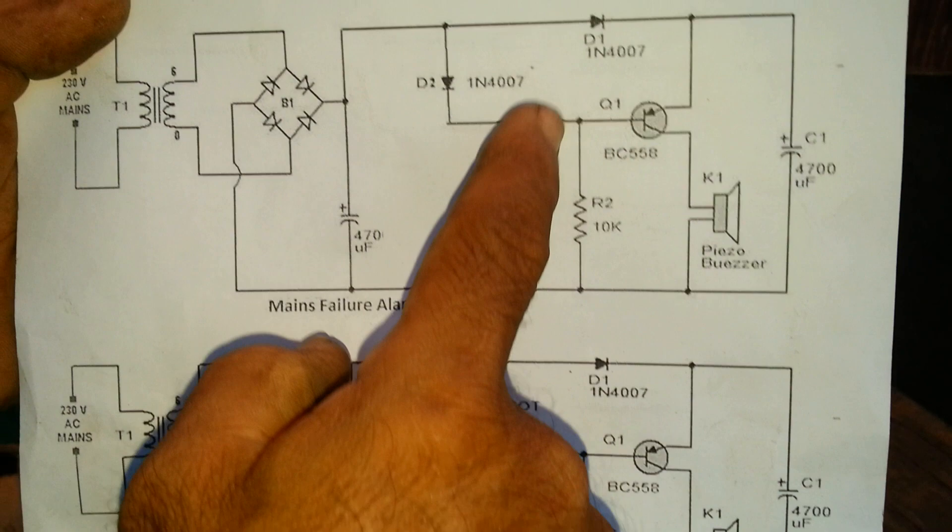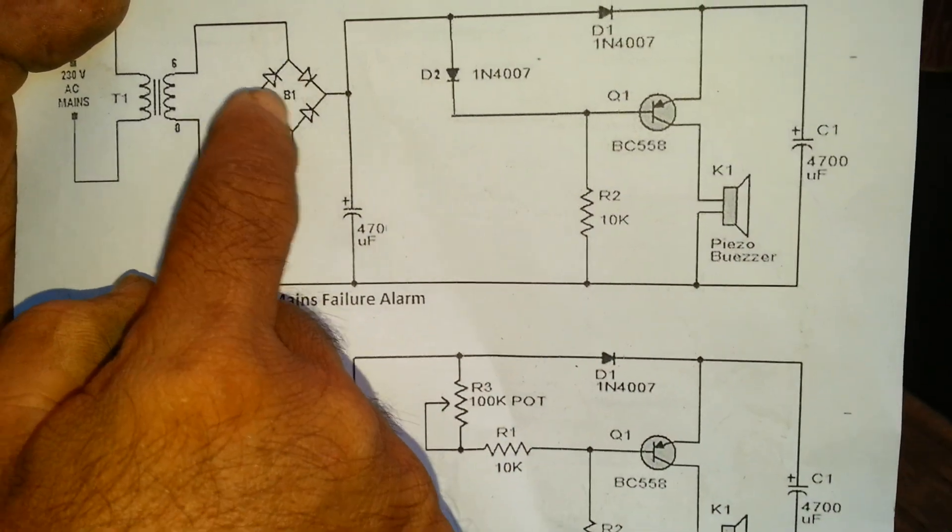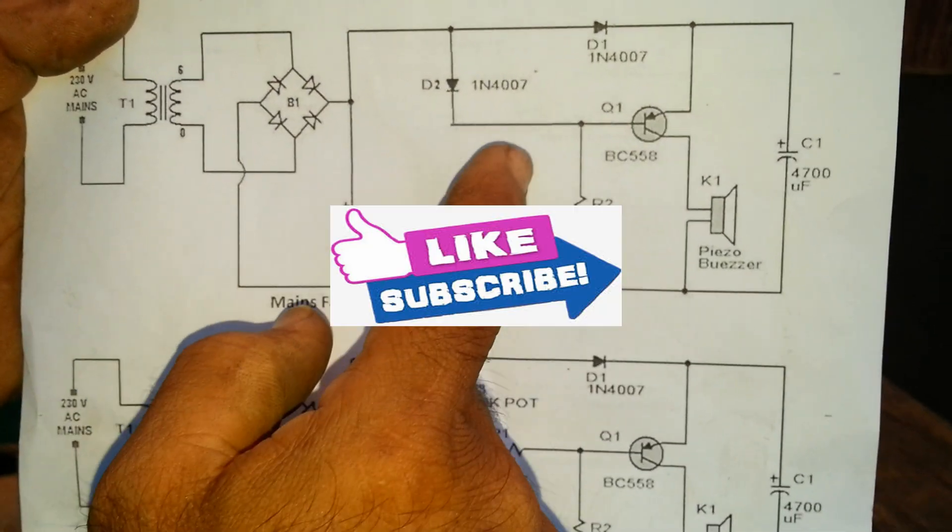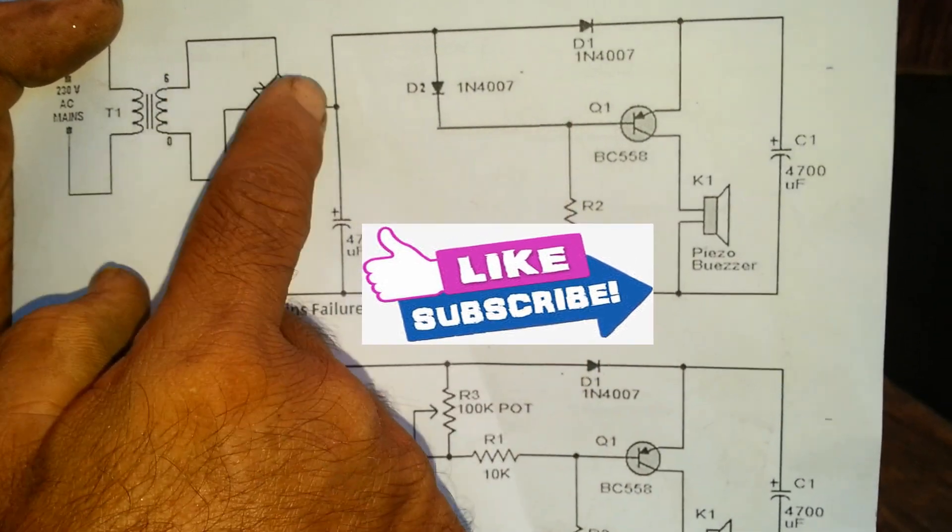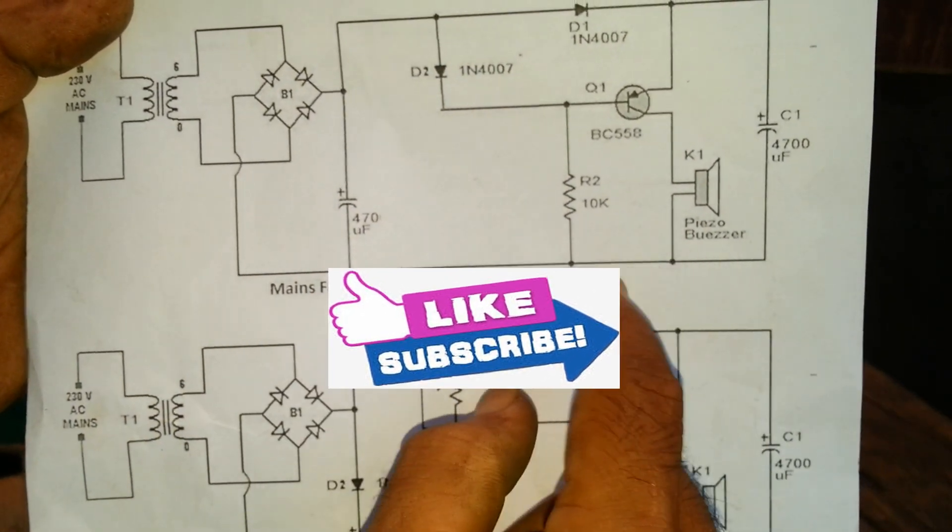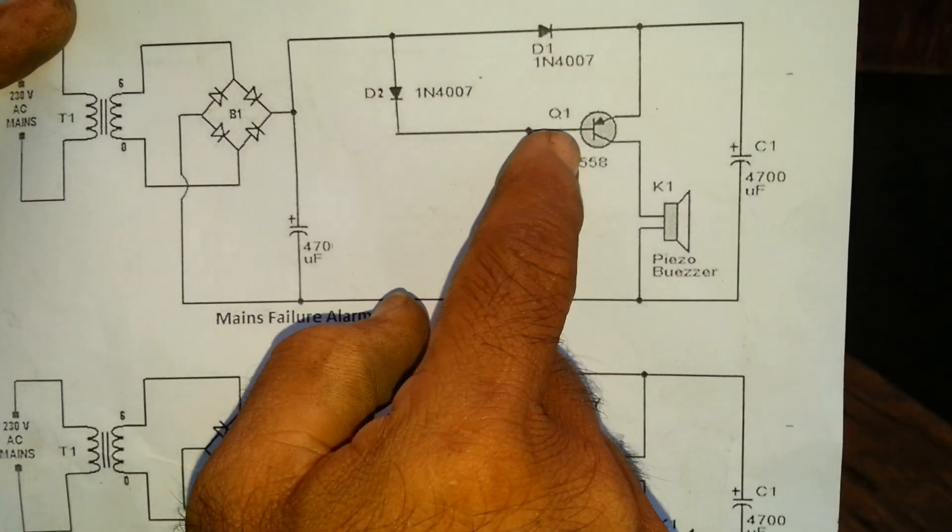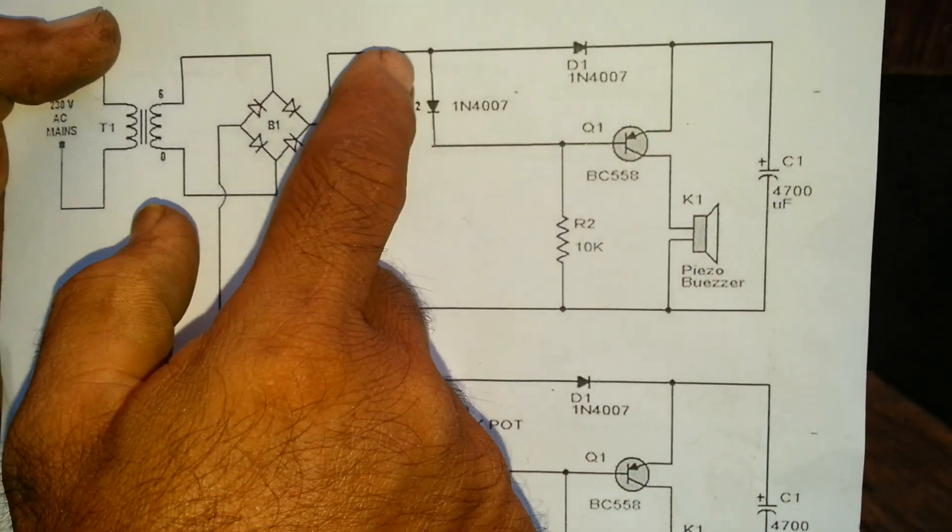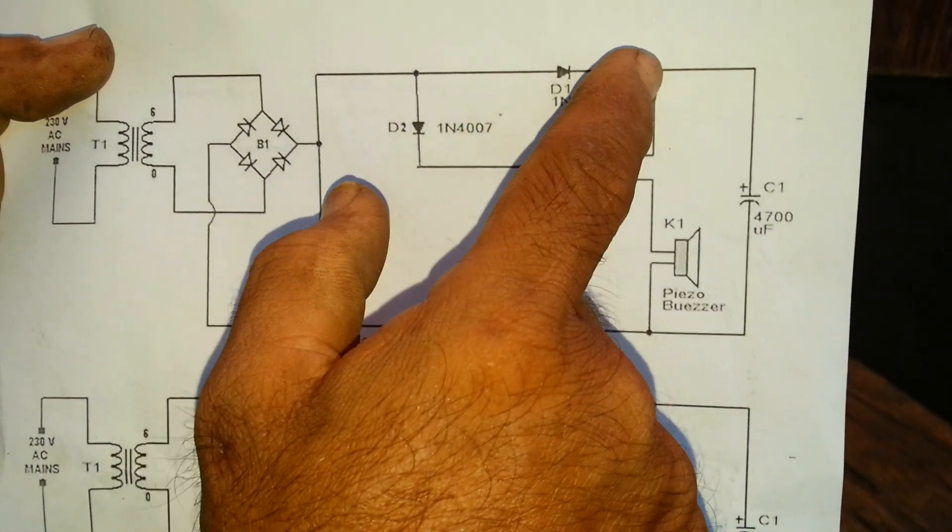When we get a negative voltage, we can get a positive voltage. We can use the first voltage and then we can use the current voltage.